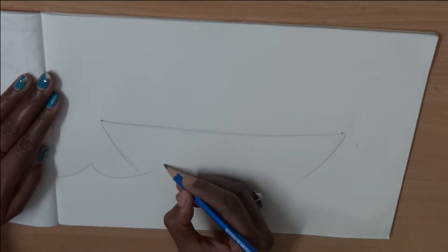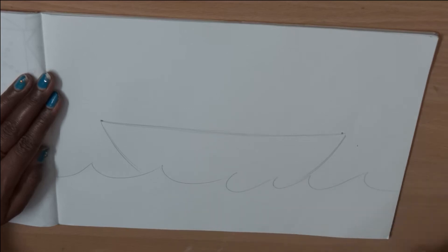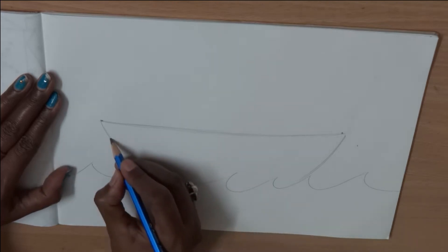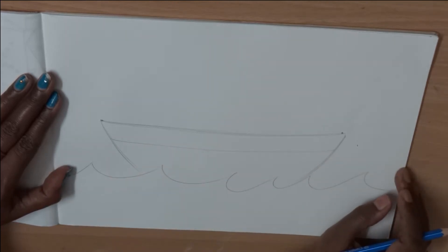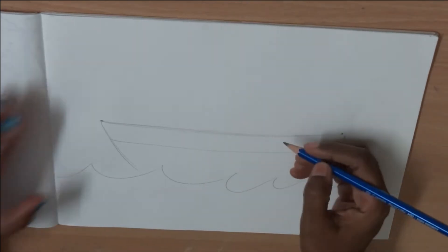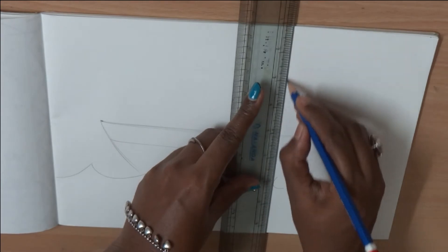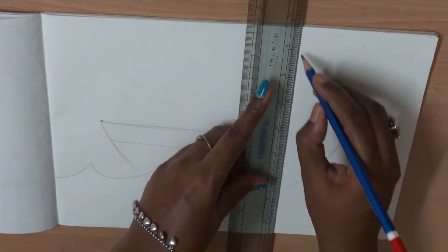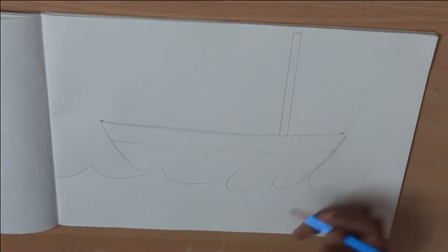Now we draw the water. We use curved lines to draw the water. Draw one more line so that we can make the boat colorful. That is the pole that we are drawing. Use a scale to draw a very straight line.